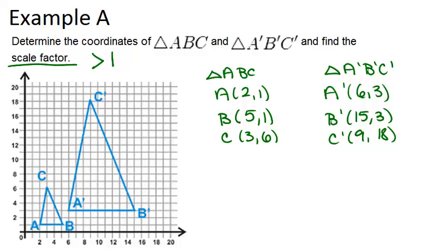Now what we want to do is compare the corresponding coordinates between A and A', B and B', C and C'. So as we look from A to A', we notice that each coordinate has been multiplied by 3. 2 times 3 is 6, and 1 times 3 is 3. Same thing for B, we're multiplying by 3 because 5 times 3 is 15, and 1 times 3 is 3.